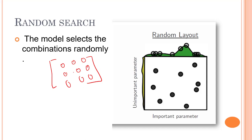In grid search we use each and every value to check which gives us the best result, but in random search we randomly select a few points to evaluate and find whichever predicts best. The smaller the subset, the faster but less accurate the optimization will be. The larger the subset, the more accurate, but it gets closer to grid search. Random search is much faster than grid search overall.